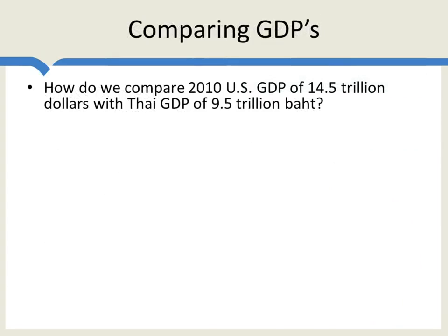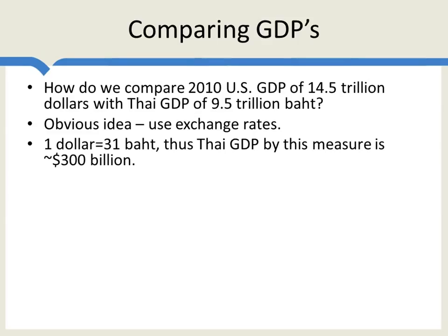The problem we want to solve is this: how do we compare, let's say, 2010 U.S. GDP of $14.5 trillion with the GDP of Thailand, which in Thailand is measured as 9.5 trillion baht? Well, the obvious idea is to use exchange rates. And indeed, if we do this, we find that $1 is equal to about 31 baht at this point in time, so Thai GDP by this measure is approximately $300 billion U.S. dollars. There are two problems, however, with using exchange rates to convert GDP.